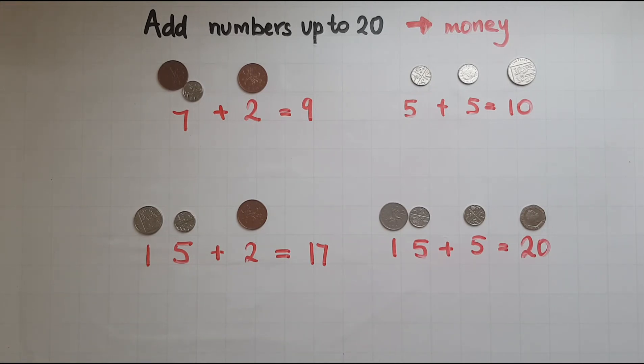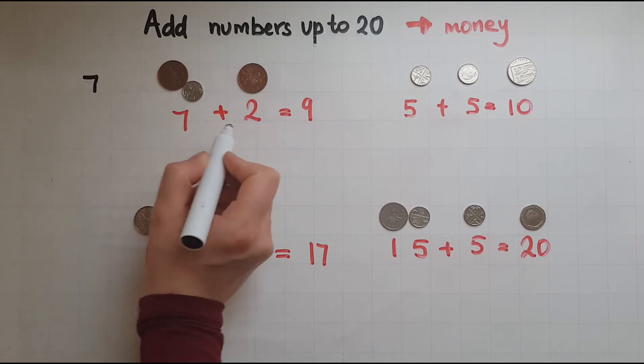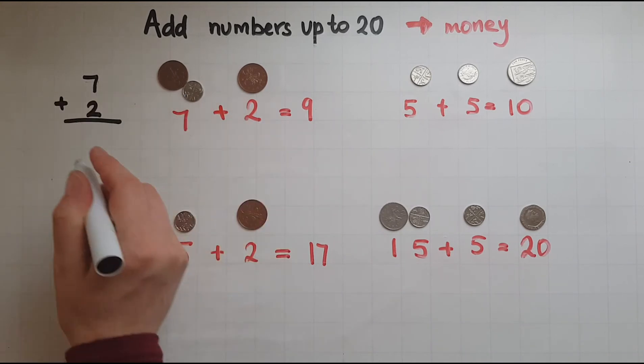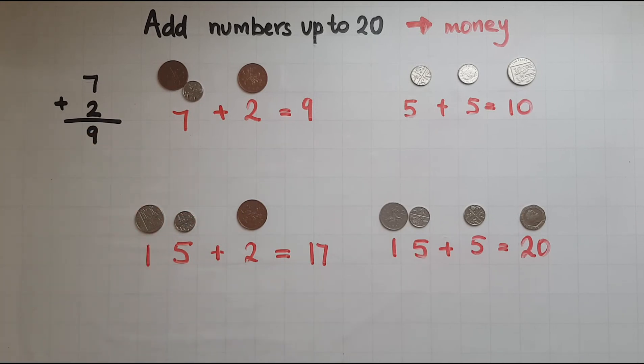Another way that you might see these presented would be this. So seven plus two, that gives me nine. So the result is the same. It's just a different way of presenting this.